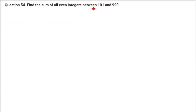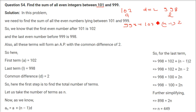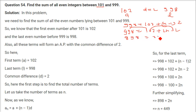Find the sum of all even integers between 101 and 999. The first even number after 101 is 102, and the last even number before 999 is 998. So A = 102, L = 998, D = 2. We write 998 = 102 + (N−1)×2, giving 998 = 102 + 2N − 2, so 102 − 2 = 100, 998 − 100 = 898, and N = 898 ÷ 2 = 449.